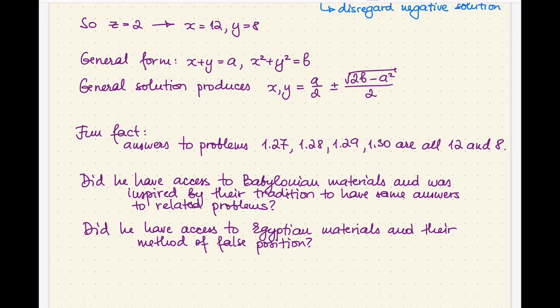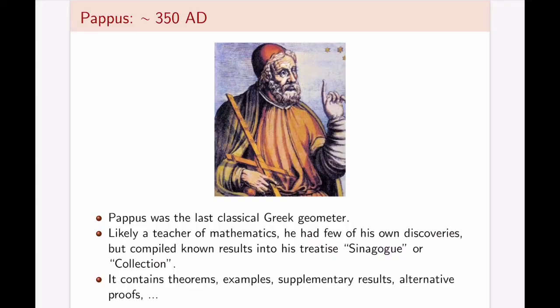While Diophantus was a Greek mathematician that developed arithmetica and algebra, Pappus, that lived in about 350 AD, is known as the last classical Greek geometer. He was likely a teacher of mathematics and, much like Euclid, is not so much famous for his own discoveries, but he is known for compiling known results into treatises. This was very important in the ancient times because this was something to be passed down, something to be used as a text, as a resource for future learning and future generations.